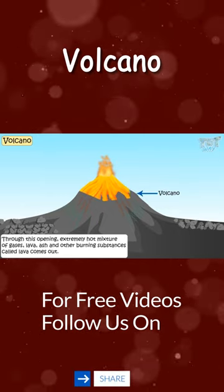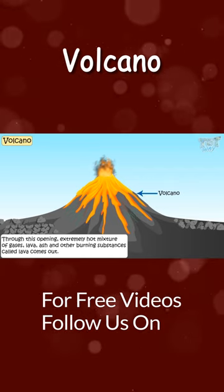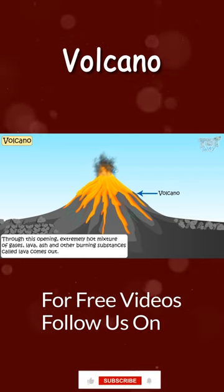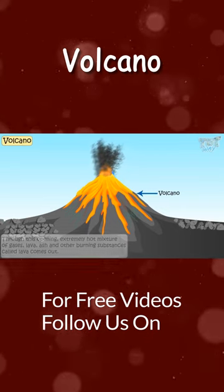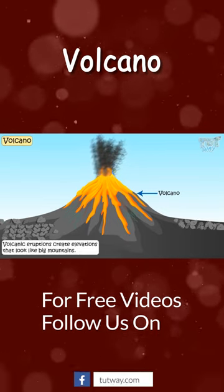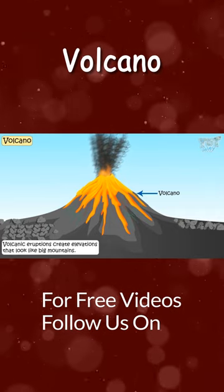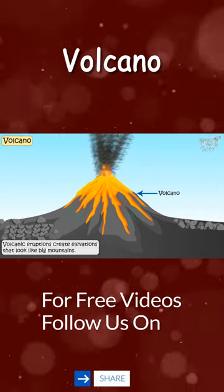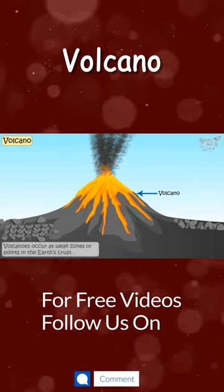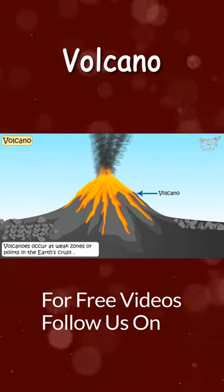Volcanic eruptions create elevations that look like big mountains. Volcanoes occur at weak zones or points in the earth's crust.